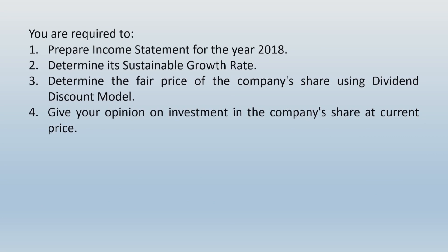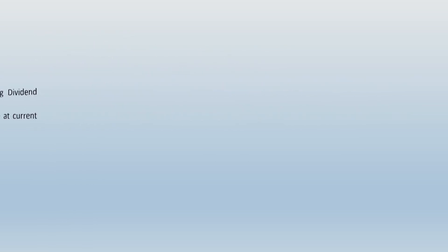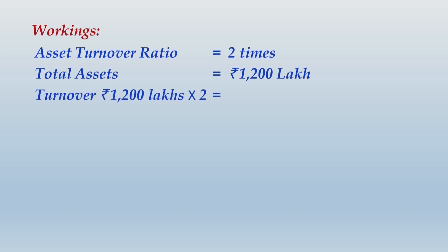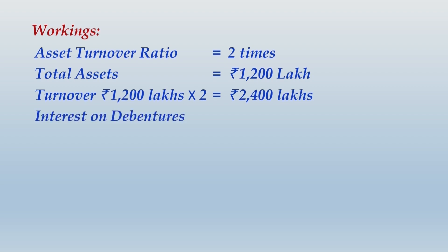The question asks us to: prepare the income statement for 2018, determine the sustainable growth rate, determine the fair price of the share using the dividend discount model, and give an opinion on investment at the current price. Starting with workings — asset turnover ratio is 2 times and total assets are ₹1,200 lakhs, so turnover is ₹2,400 lakhs. Interest on debentures is 10% of ₹350 lakhs = ₹35 lakhs.